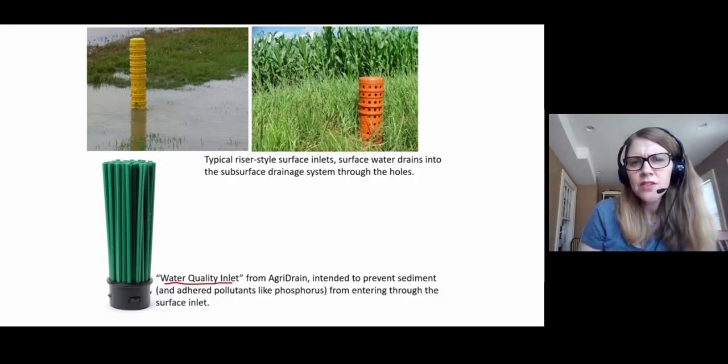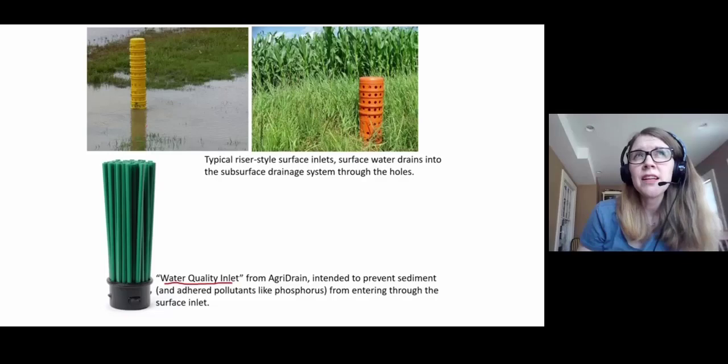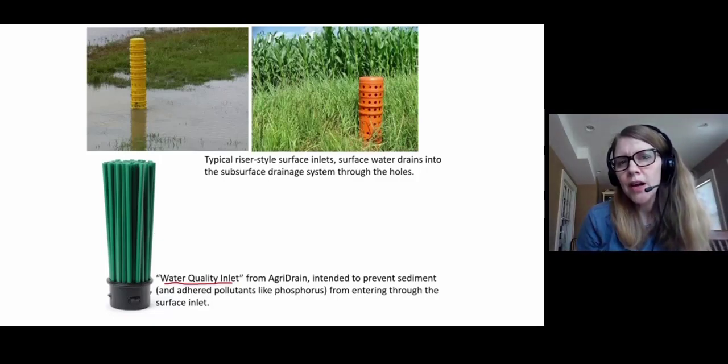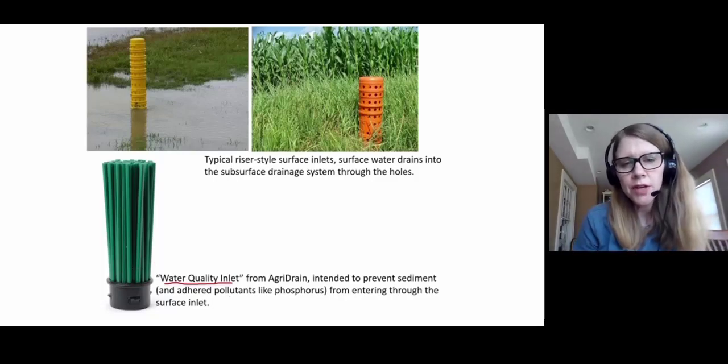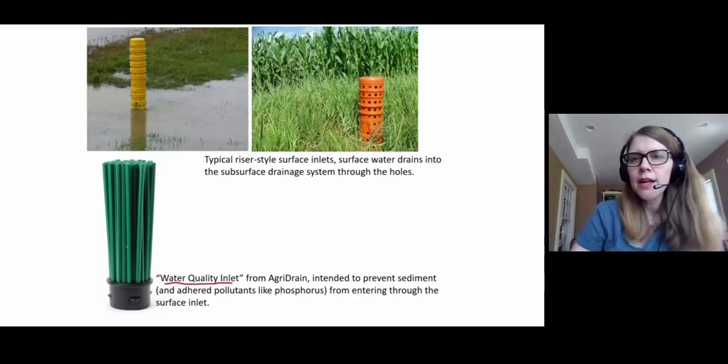So here's an example of one known as a water quality inlet. And if it looks a little bit like a dense grass cover, that's kind of what it's meant to mimic. The idea here is that in this old riser style with just the holes in it, if you've got this surface runoff that's here that you're trying to drain away, it's probably going to have sediment particles in it, and if it's got sediment particles in it or in an ag situation, it's probably also got phosphorus adhered to those sediment particles. Maybe we could have a system like this which kind of filters out those sediments and adhered pollutants before that water enters the surface inlet.